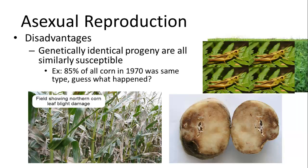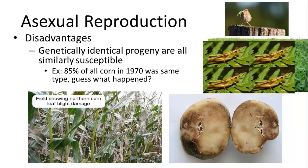Similar things happened with potatoes — a potato blight devastated a potato famine throughout the world, with particularly severe effects in Ireland. Going back to the grasshopper example, if a new predator arrives and finds your traits appealing, it will easily kill off you and your progeny because you're all the same.